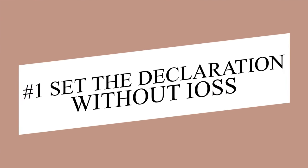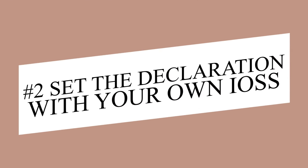When it comes to selling to the EU, there are two occasions. When the order value is above 150 euros, the recipient will be required to pay VAT and customs duties. When the order value is less than or equal to 150 euros, there are three options for CJ users to set the declaration. First, set the declaration without IOSS — in this case, the recipient will be required to pay VAT in order to complete customs clearance, otherwise the parcel will be detained or destroyed by customs.